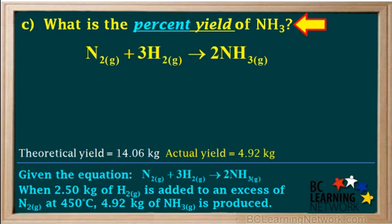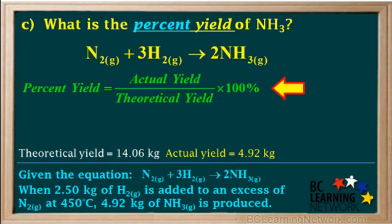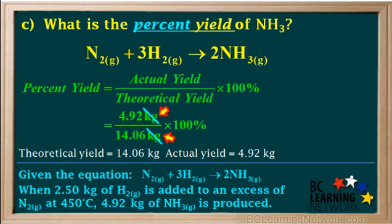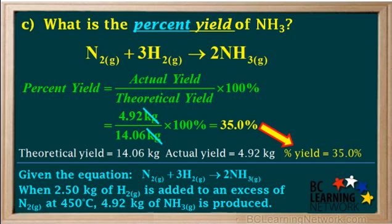Part C asks us to determine the percent yield of ammonia. The formula for percent yield is actual yield over theoretical yield times 100%. We substitute 4.92 kilograms in for the actual yield and 14.06 kilograms for the theoretical yield. Notice that both of these are in the same unit, kilograms. We multiply by 100%, cancel out the kilograms, and go 4.92 divided by 14.06 times 100, which comes out to 35.0%, rounded to three significant figures. So we'll note the percent yield here.